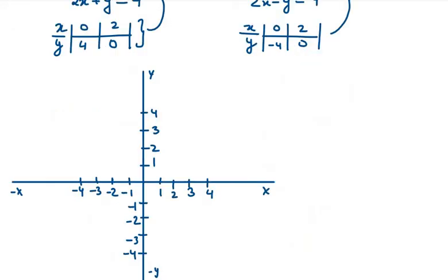Now for the first equation, we need to mark 0, 4. So 0, 4 lies on the y axis. This is my point. Now the second point is 2, 0. So 2, 0 lies on the x axis. It will be here. Now we need to join them.